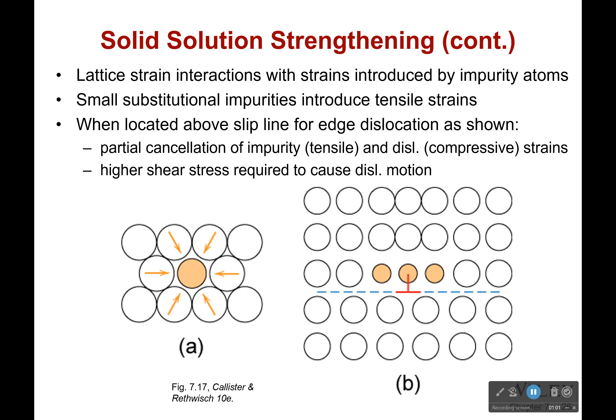The way we can do that is by adding in another material in a solid solution. The lattice strain interactions with the strains introduced by impurity atoms will make it more difficult for that dislocation to move. For example, if we put a smaller atom in place of a larger atom, the surrounding atoms press in on it — that can cancel out the tensile and compressive strains, and it will cause a higher shear stress to be required to cause dislocation motion.